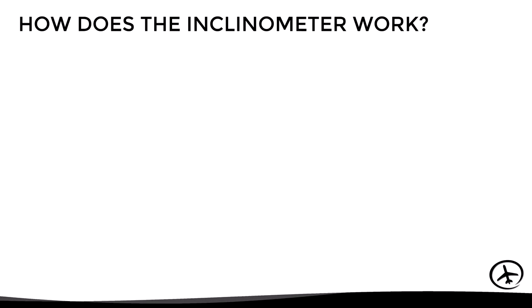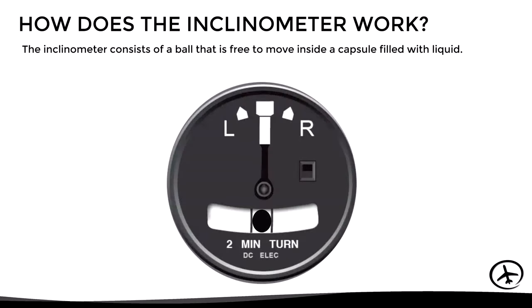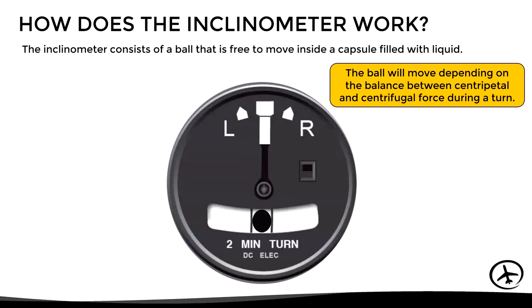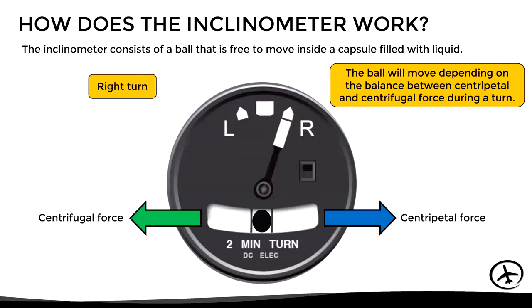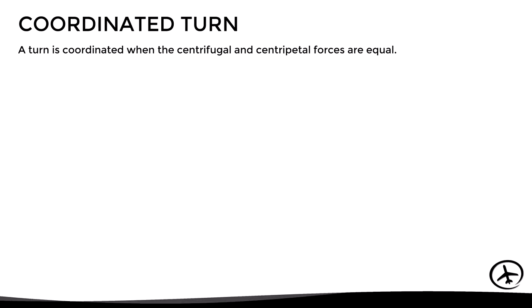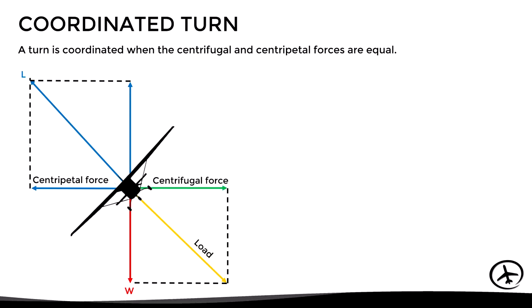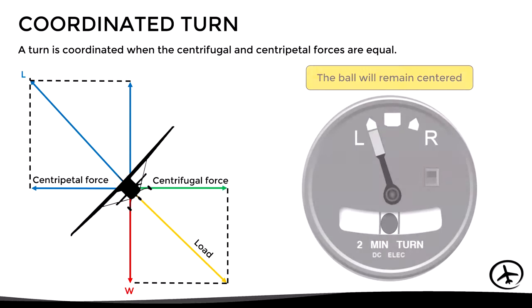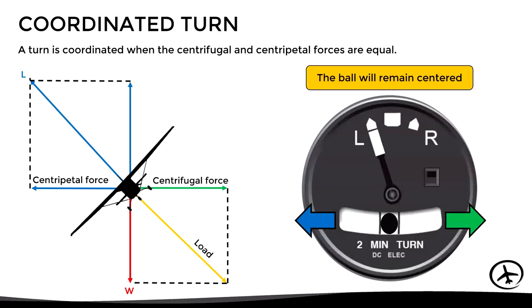Let's now see the principle of operation of the inclinometer. It consists of a ball free to move inside a slightly curved capsule filled with liquid. The ball moves depending on the balance between centripetal and centrifugal forces during a turn. If the aircraft starts turning to the right, the ball is subjected to both forces. If these forces are equal, the ball remains centered — indicating a coordinated turn.